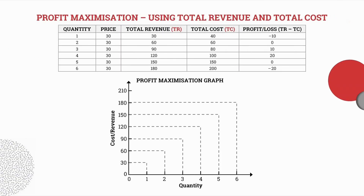We're going to kick off today's lesson with the aid of a total revenue and total cost table, starting with our definitions. Total revenue refers to all the income that has been earned from the sale of goods and services. Total costs refers to all the costs that have been incurred by the business when producing goods and services. A profit is earned when total revenue exceeds total costs, and a loss is incurred when total costs exceed total revenue.